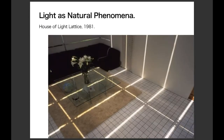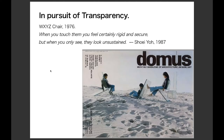For example, the House of Light Lattice was built in 1981. The light coming through the slits changes from time to time — this is architecture that captures light as a natural phenomenon. And since Shohei Yo was interested in light and gravity, he was also very interested in transparency. He designed the WXYZ chairs in 1976: interpretations of famous modern chairs designed by Mackintosh, Rietveld, Mies van der Rohe, and Le Corbusier — but all in glass.